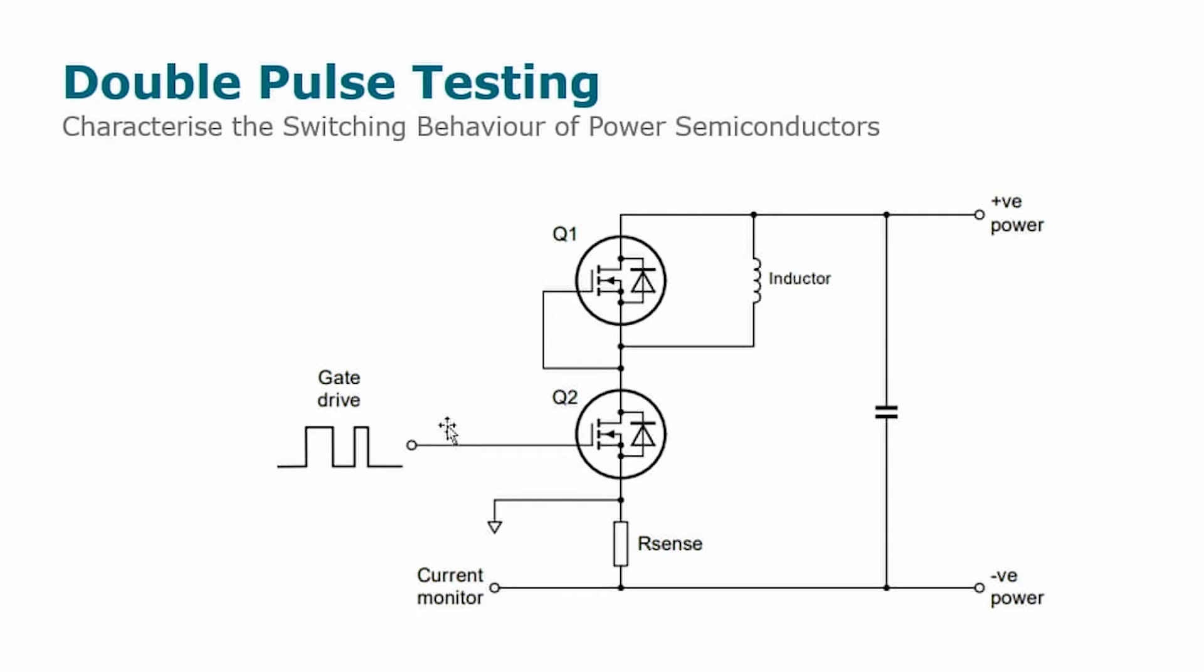When we give the first pulse, we turn on the low side MOSFET and current flows through the inductor, charging the inductor. Then when the gate signal gets to zero again, this MOSFET turns off and the inductor current will flow through the high side freewheeling body diode.